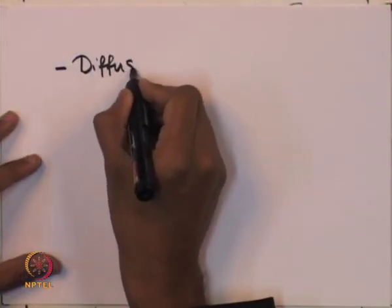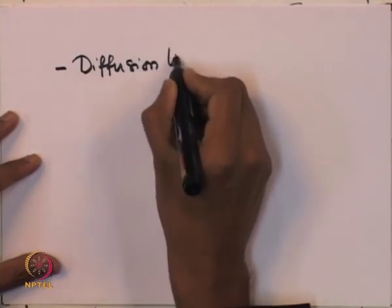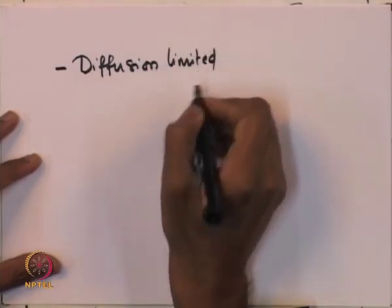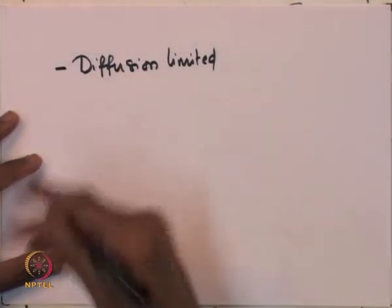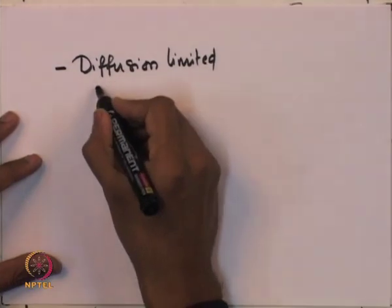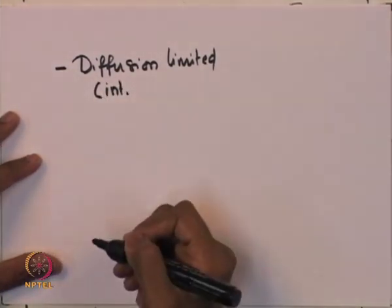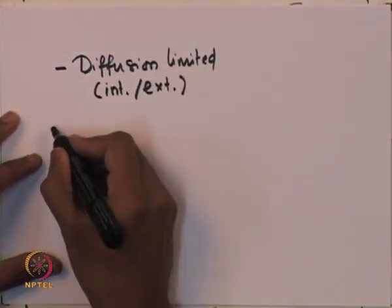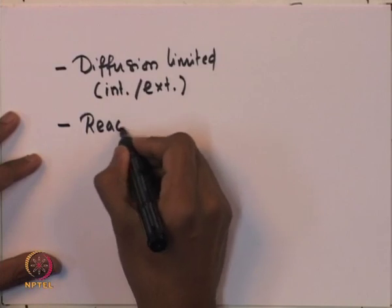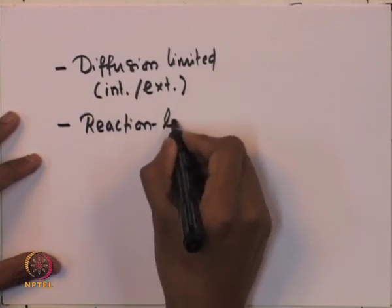The diffusion-limited situation can actually be of two types. One can be external diffusion. So, diffusion-limited reaction conditions can be either internal diffusion controlled or external diffusion controlled. The other possibility is where the conditions are reaction limited.